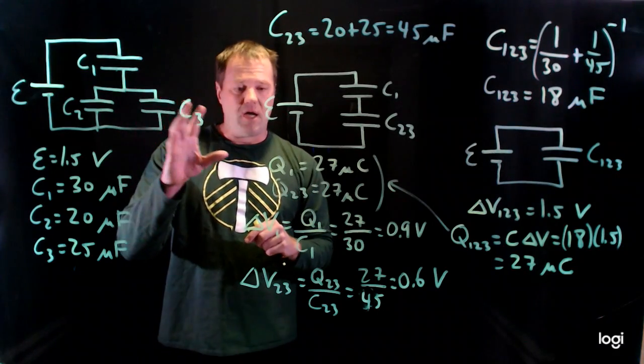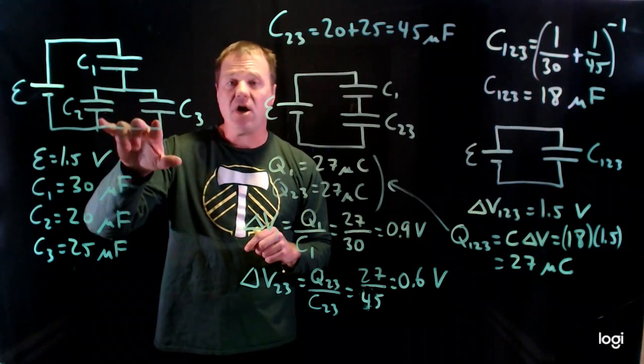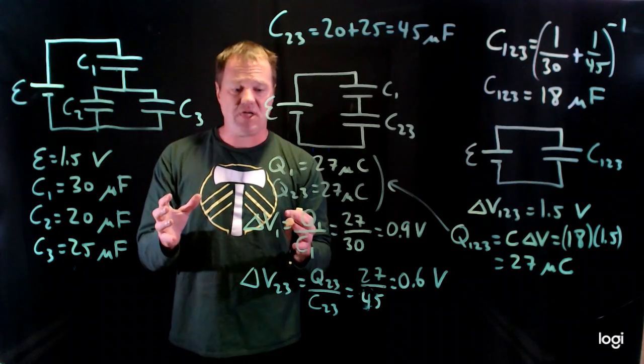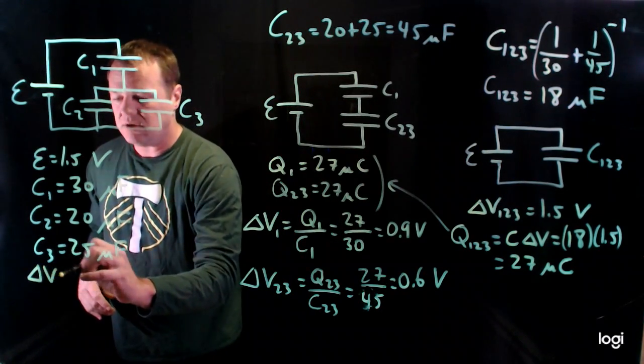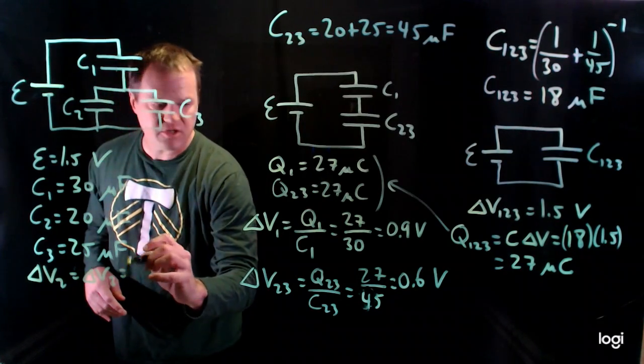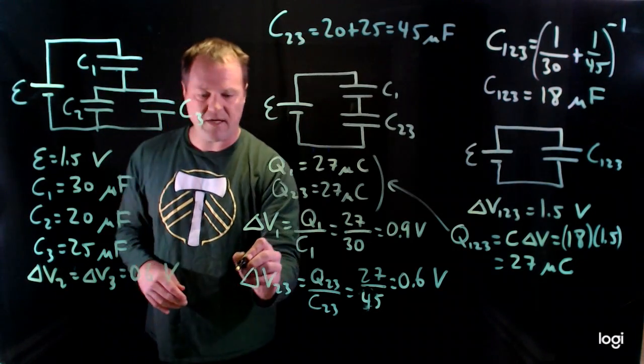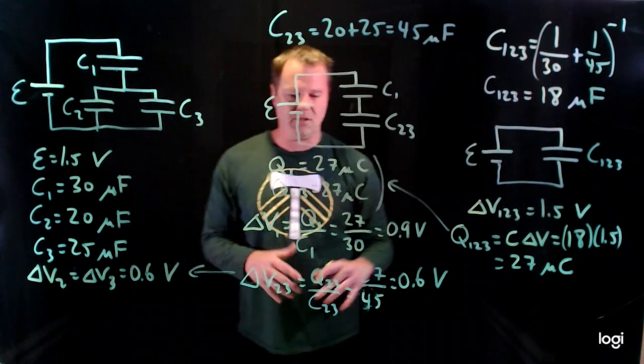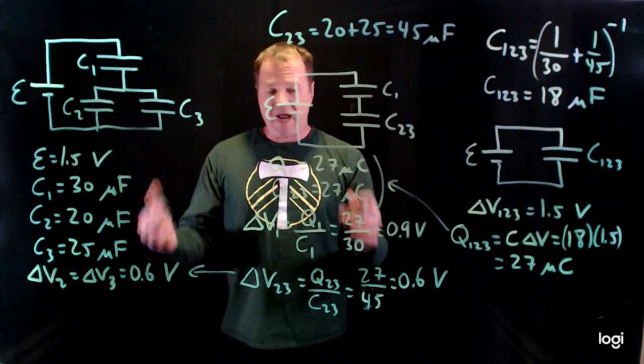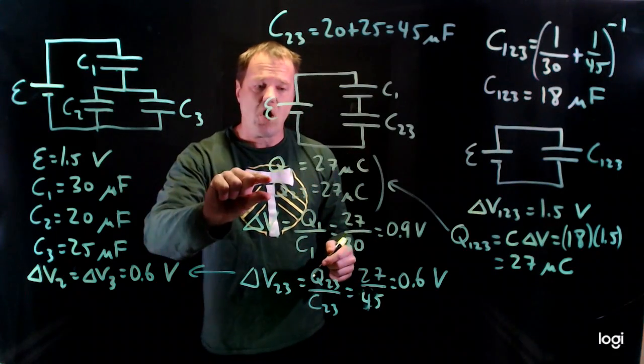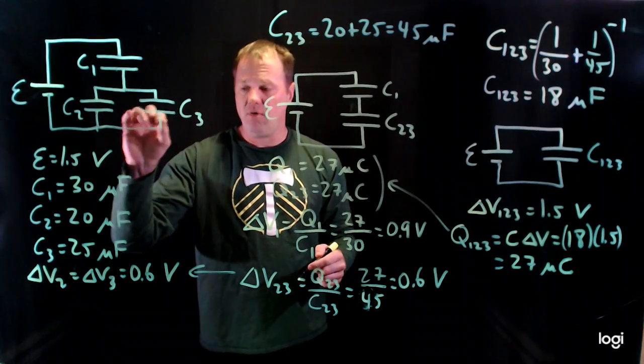So I'm going to assert the potential difference. So these are parallel circuit elements. They have to have the same potential difference. So I'll just say delta V2 equals delta V3, just an assertion, 0.6 volts. So that comes from this information, same individual as the group for parallel circuit elements. But I needed to figure out how this charge gets divided between these two. The group has 27 microcoulombs, but what about the individuals?